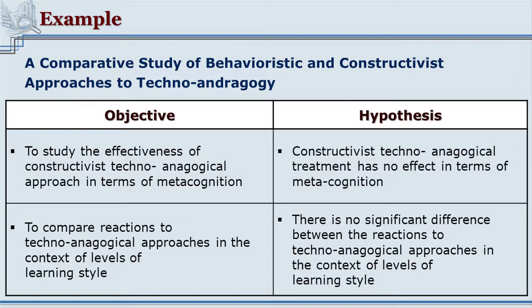In this case the hunch or tentative solution is written in the form that there is a significant relationship between the two. The second objective reads: 'To compare reaction of technoandragogical approaches in the context of levels of learning style.' The corresponding hypothesis is: 'There is no significant difference between the reactions to technoandragogical approaches in the context of levels of learning style.' This hypothesis says that levels of learning style do make a difference in reaction to the treatment.